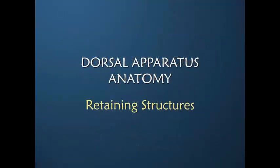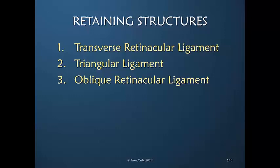What exactly do the retaining structures do? Let's look again at the three retaining structures: the transverse retinacular ligament, triangular ligament, and oblique retinacular ligament. None of which are a true ligament in the classic definition of fibrous tissue going from one bone to another across a joint. The transverse retinacular ligament and triangular ligament do not cross joints, while the oblique retinacular ligament crosses two joints.